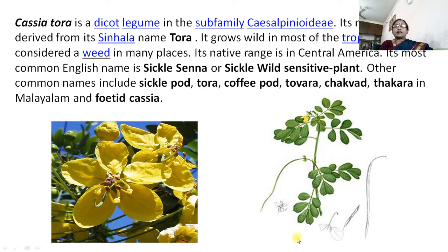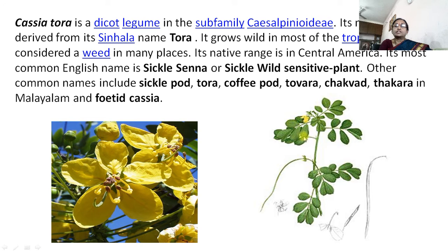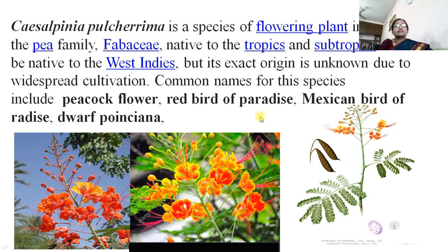Cassia tora, commonly called Tarota or sickle senna, grows wild in most of the tropics and is considered a weed in many places. Its native range is Central America. The seeds and young leaves can be used as a vegetable. Caesalpinia pulcherrima (Gold Mohor): this is the plant with young and blooming flowers. It is a roadside tree with common names peacock flower or red bird of paradise.